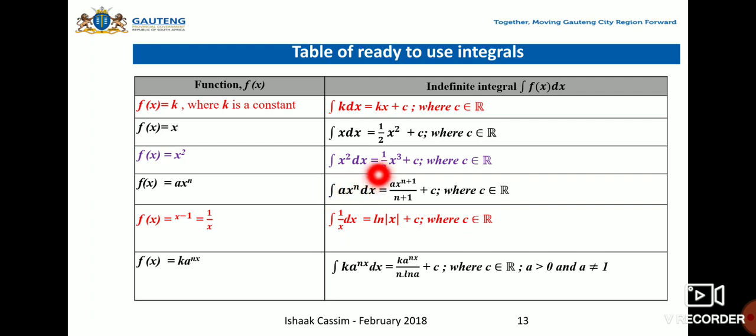For example, if f(x) = k (a constant), then ∫k dx = kx + C, where C ∈ ℝ. If f(x) = x, then ∫x dx = (1/2)x² + C. If f(x) = x², then ∫x² dx = (1/3)x³ + C.